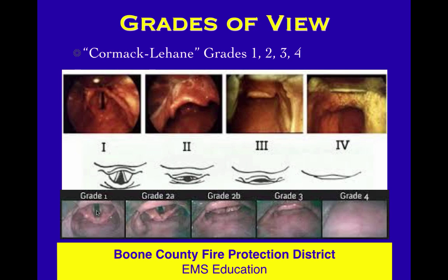In the bottom pictures, Grade 1 again shows the full glottic opening. Some sources divide Grade 2 into 2a and 2b, but we don't use that designation as much — if you can see part of the glottic opening that's a Grade 2, if you can see all of it that's a Grade 1. If all you can identify is just the epiglottis and you don't see any of the glottic opening, that's a Grade 3.